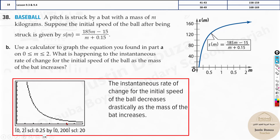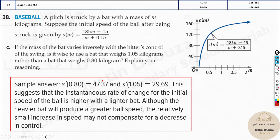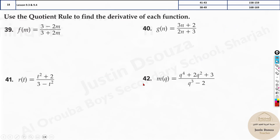For part c — is it wiser to use a bat of 1.05 kg rather than 0.8 kg? Plugging into the derivative equation, at 0.8 kg the instantaneous rate of change is about 47, and at 1.05 kg it's about 29. Since the problem states that mass varies inversely with the hitter's control of the swing, the lighter 0.8 kg bat is the better choice — the speed gain from the heavier bat doesn't compensate for the large drop in rate of change.